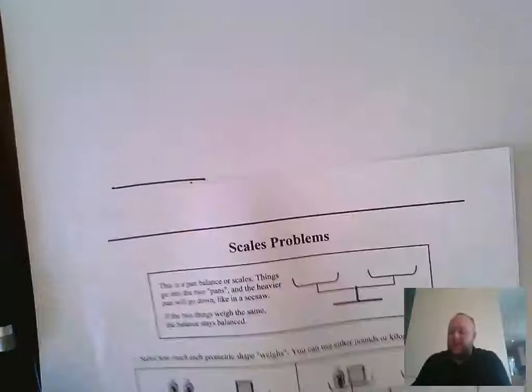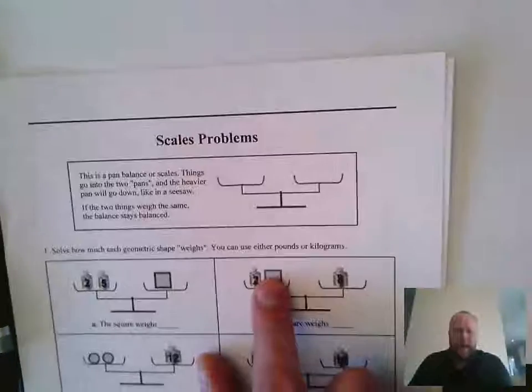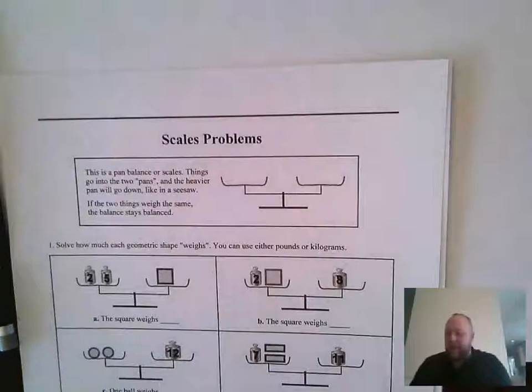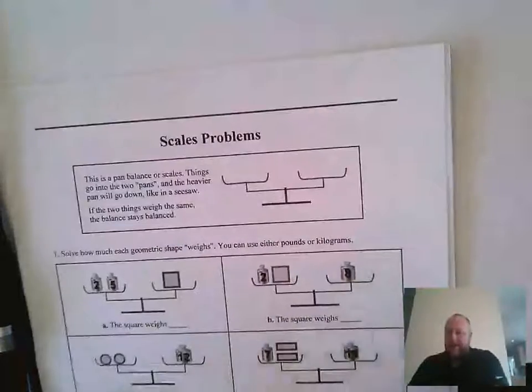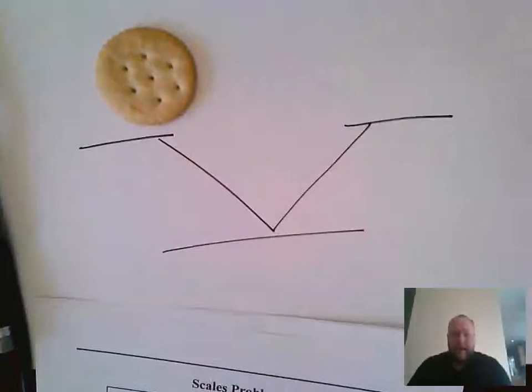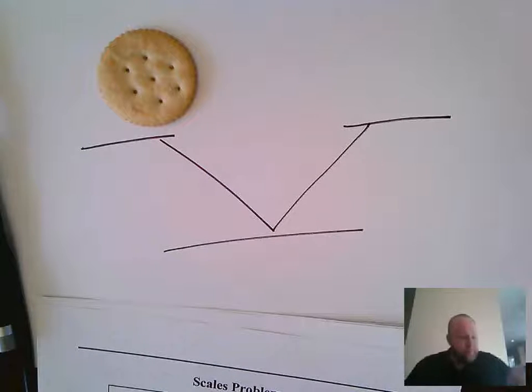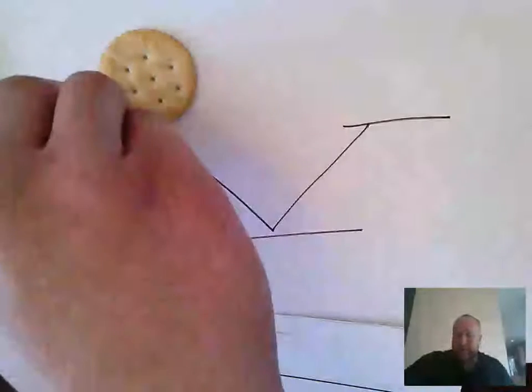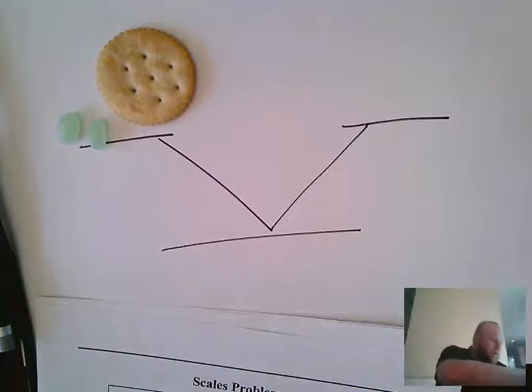What you can do is draw out a balance. Say if we're trying to do this second problem where I've got a square, I don't have any squares in my house but I've got some Ritz crackers. So I'm going to say that one cracker plus two jelly beans is equal to eight jelly beans.